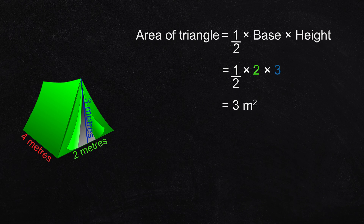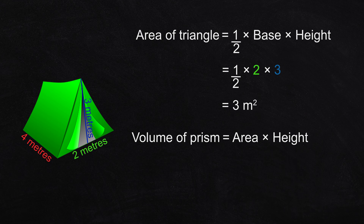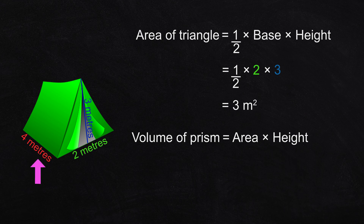Then to find the volume, we multiply the area of this triangle by the height of the prism. Be careful — the height of the two-dimensional triangle is three meters, but the other dimension of the prism is also called the height in this rule. The height of this three-dimensional prism is four meters. The volume is area times height. That's three times four, which is 12. The volume of this triangular prism is 12 cubic meters.